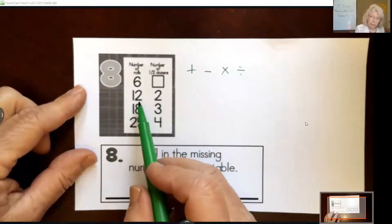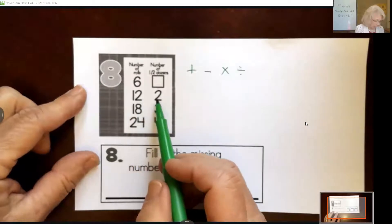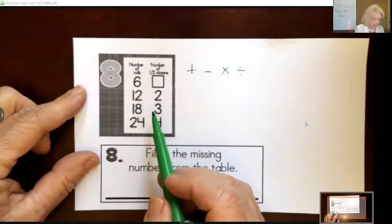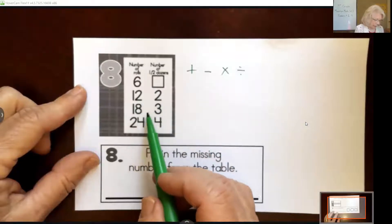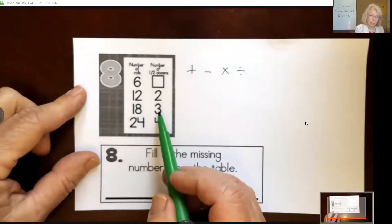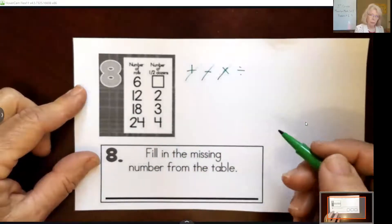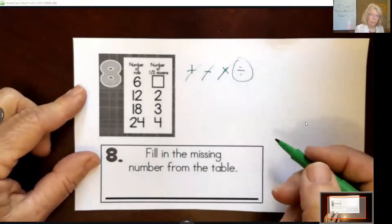The first thing we might see is the number is getting smaller, so we might try subtraction. 12 take away 10 is 2, but does that work on the next one? 18 take away 10—oops, not 3. So subtraction didn't work. It's getting smaller, so we can't use addition or multiplication, so it must be division.